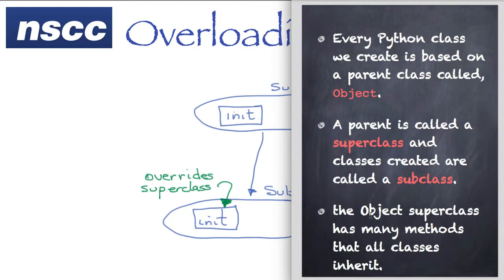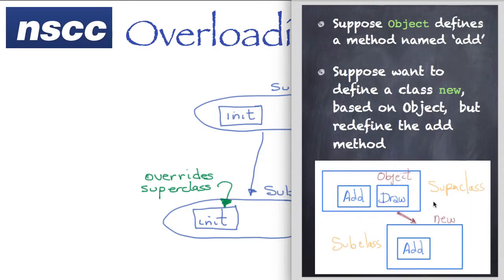The object superclass, the one at the very top, has many methods that all classes inherit. Sometimes we want an object to behave slightly differently for certain things. At the very top we have a superclass called object with methods like add and draw.